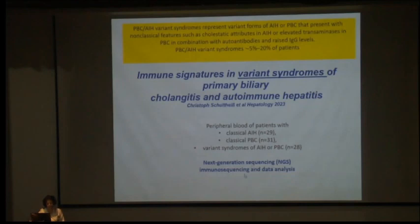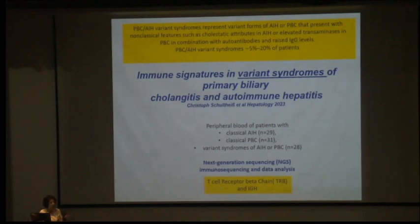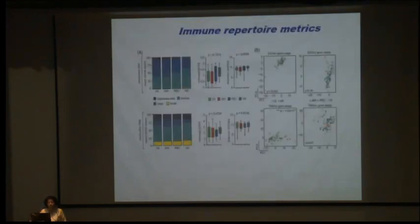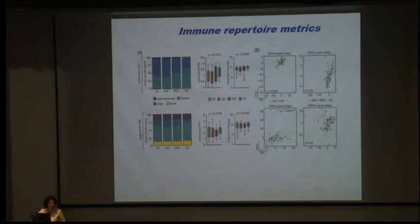In this study, they took 29 classical AIH patients, 31 classical PBC patients, and 28 variant syndrome patients, and performed next-generation immunosequencing of TRB — T cell receptor beta chain — and IGH. They used the beta chain because it is more diversified with hypervariable regions, giving maximal antigen coverage. Similarly, IGH — the immunoglobulin heavy chain — was used for B cell receptor analysis. However, they did not find any significant difference between the groups in TRB or IGH diversity.